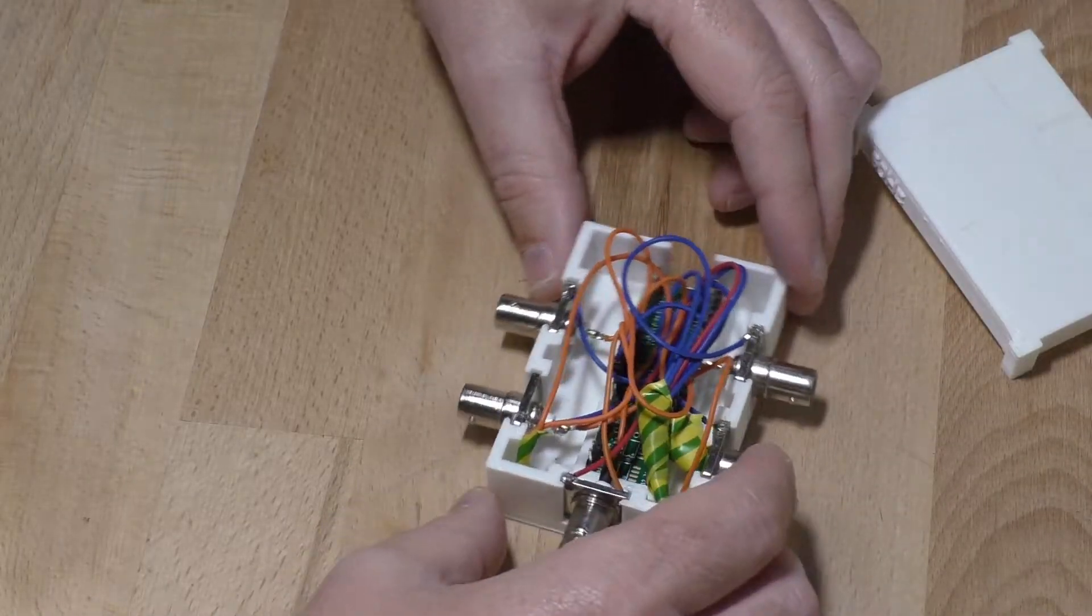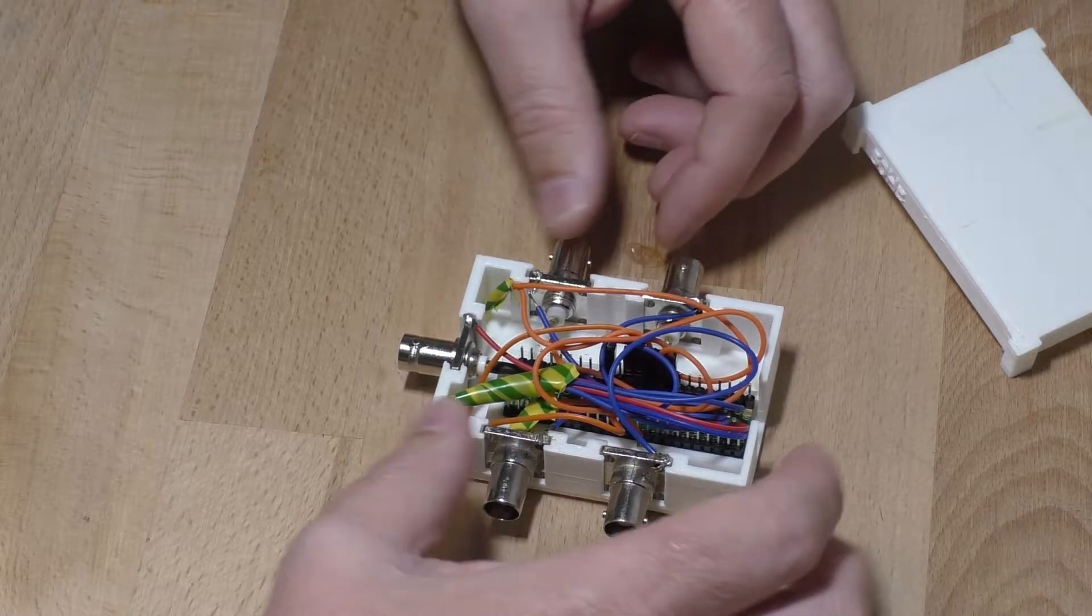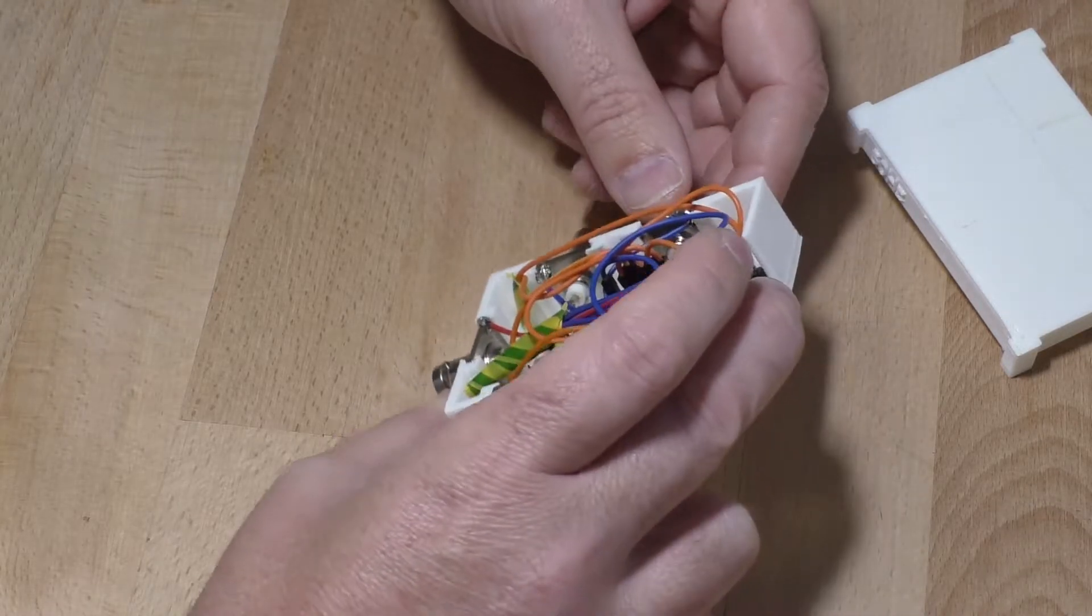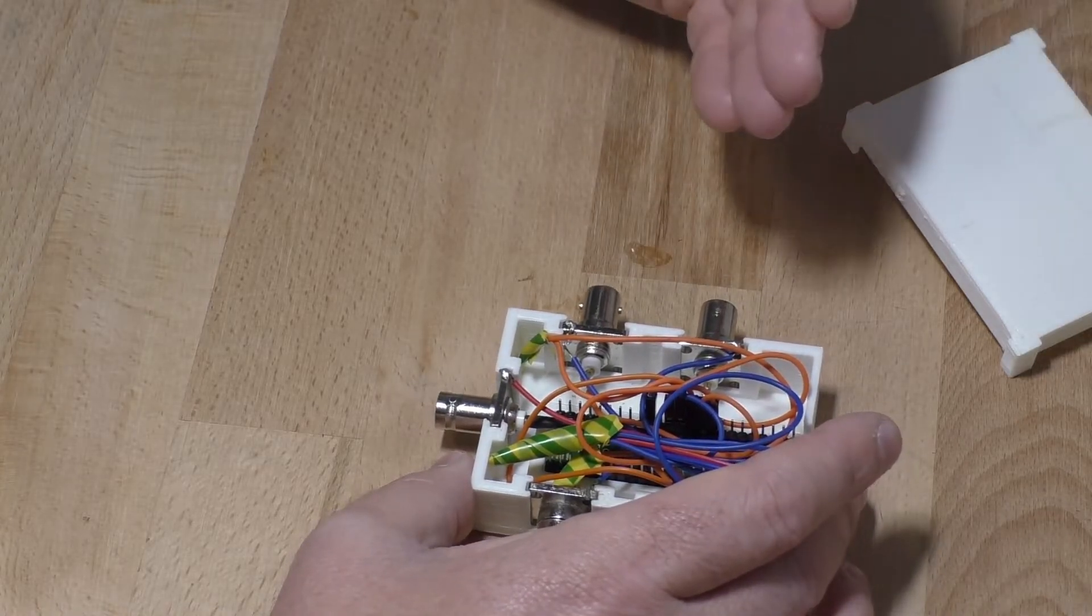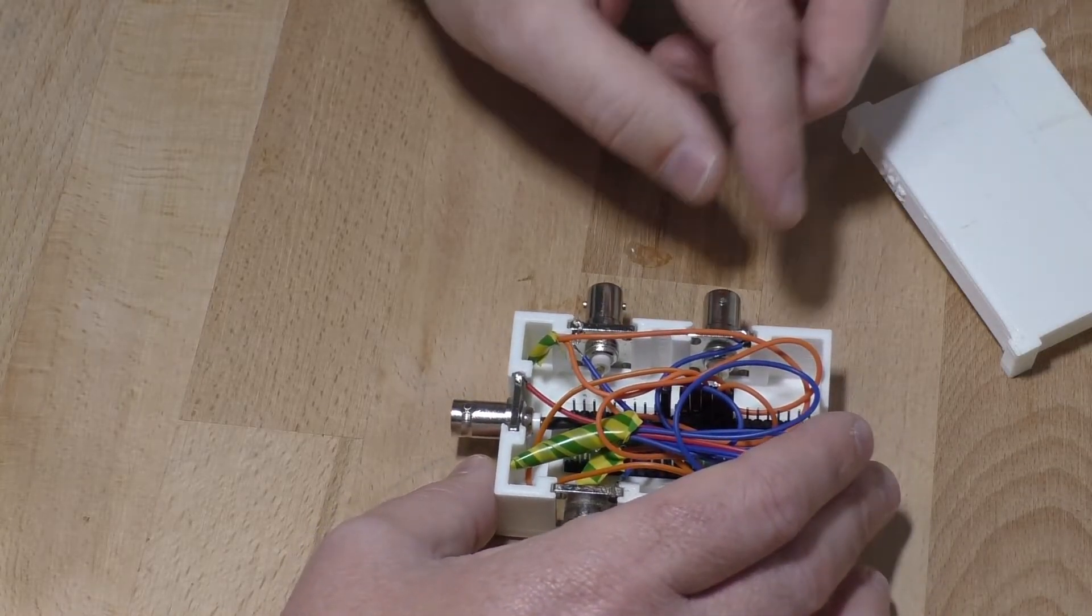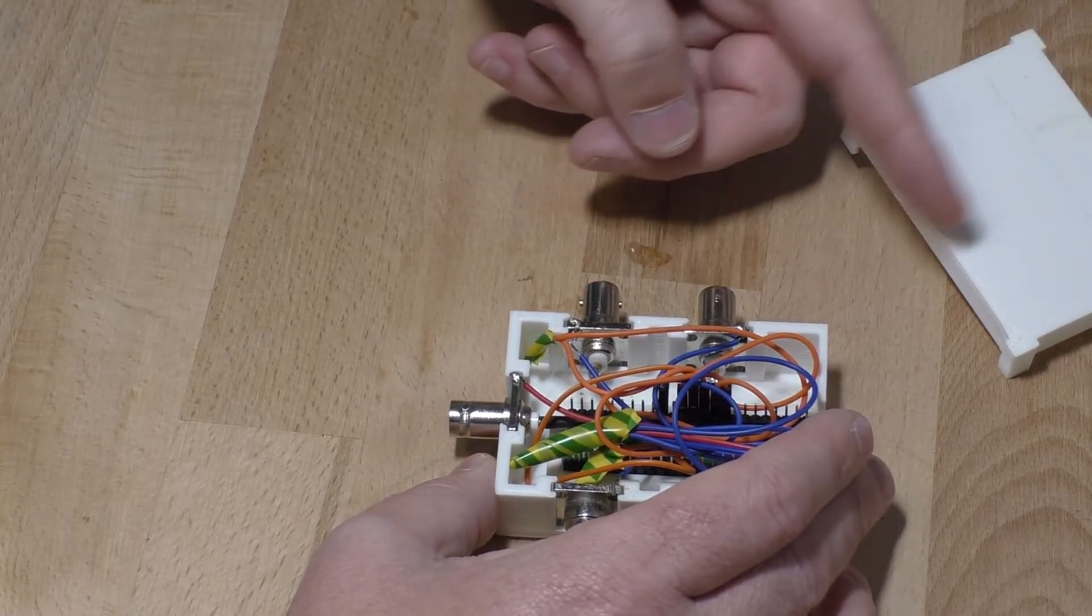And this is what I used to do it. What's in here is just a Teensy 4.1, some BNC plugs, and what I've done is I'll send a command from the computer asking what the analog pin voltage is, and I'll take it back to the computer and record it.